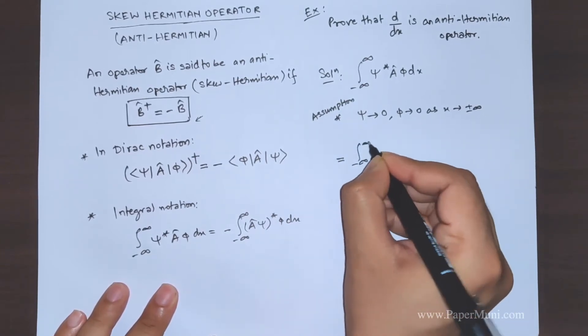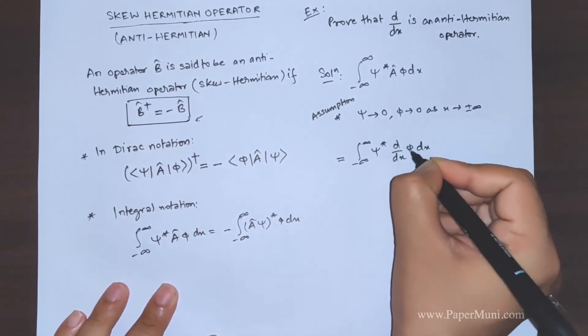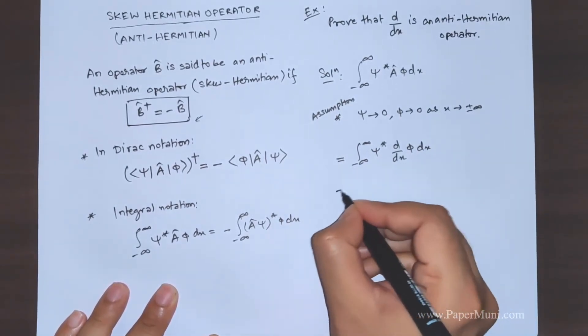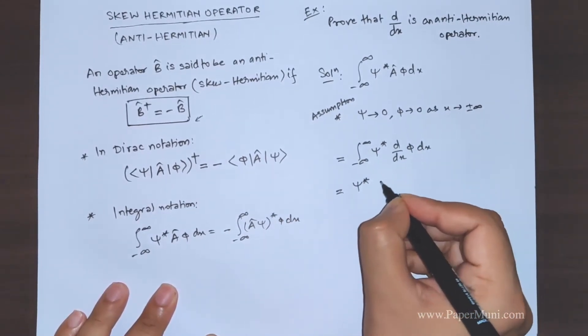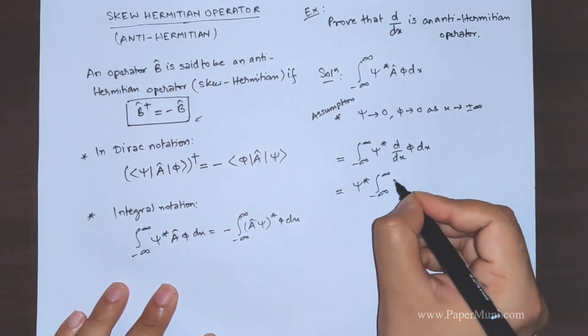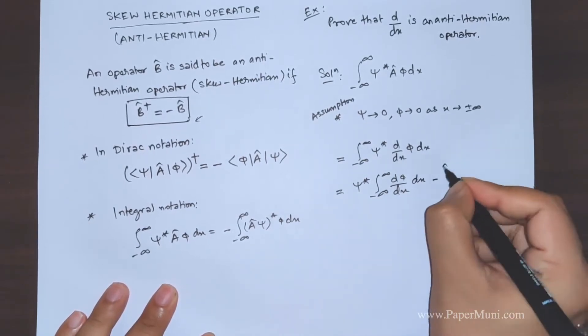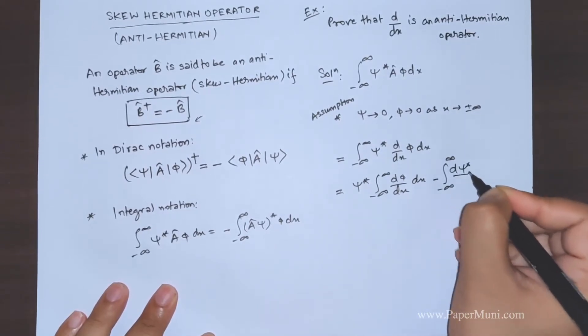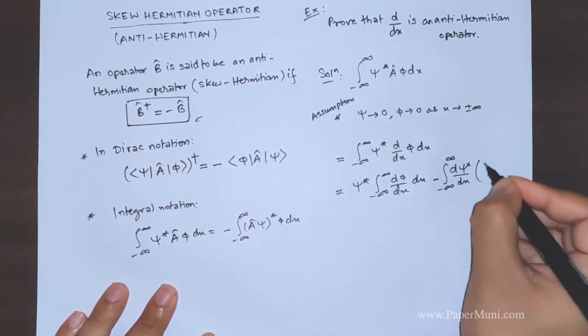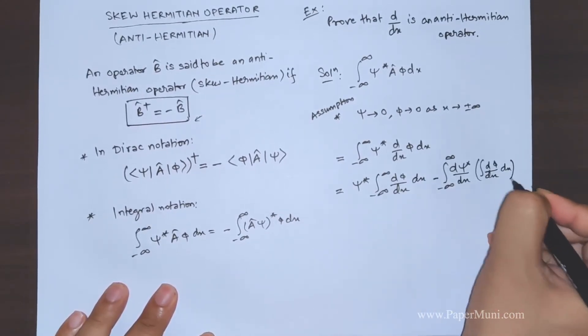So this side, this is psi star minus infinity to plus infinity d phi dx dx minus minus infinity to plus infinity d psi star dx. Now this integration of this term, second term and another dx.